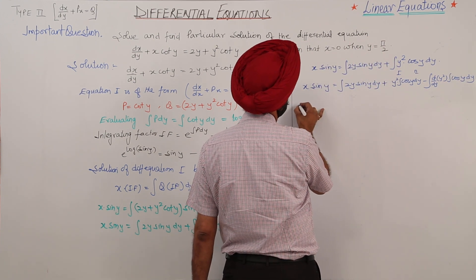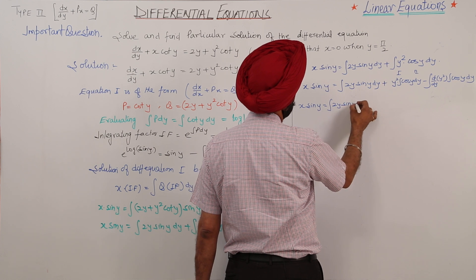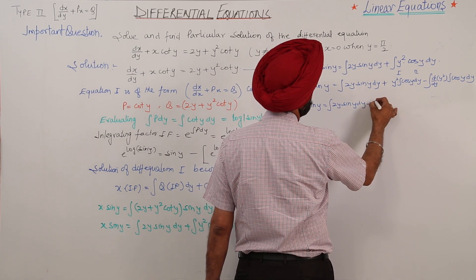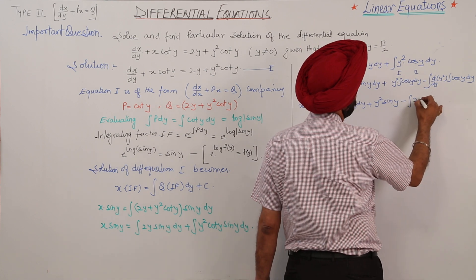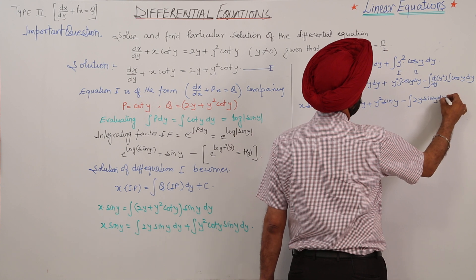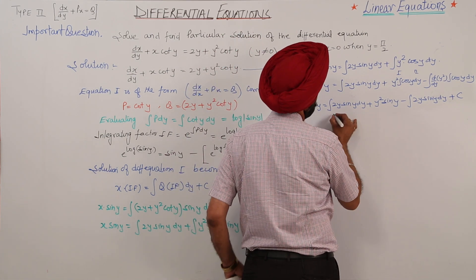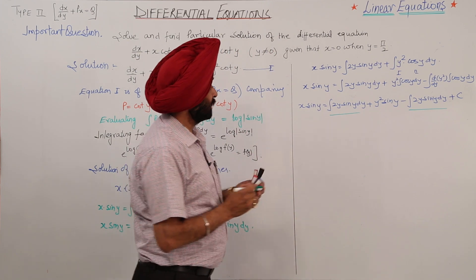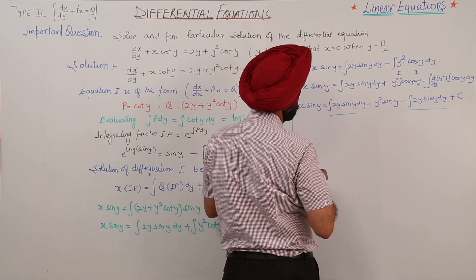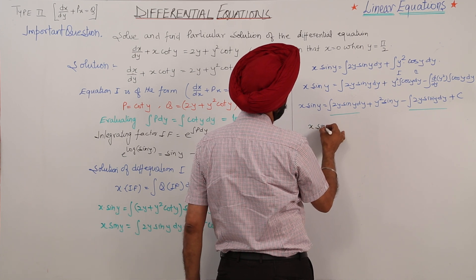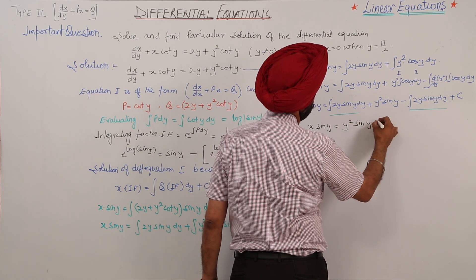After expanding, we have x sin y equals the integration of 2y sin y dy plus y squared sin y minus the integration of 2y sin y dy plus C. Notice that the integration of 2y sin y dy terms cancel each other out with opposite signs. After cancelling, what remains is x sin y equals y squared sin y plus C.